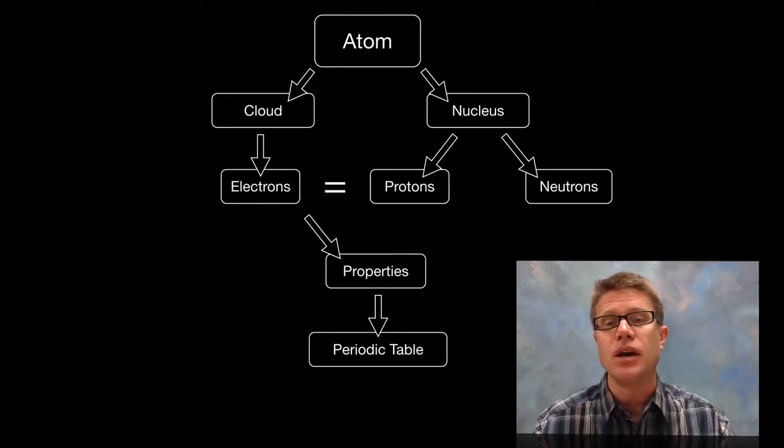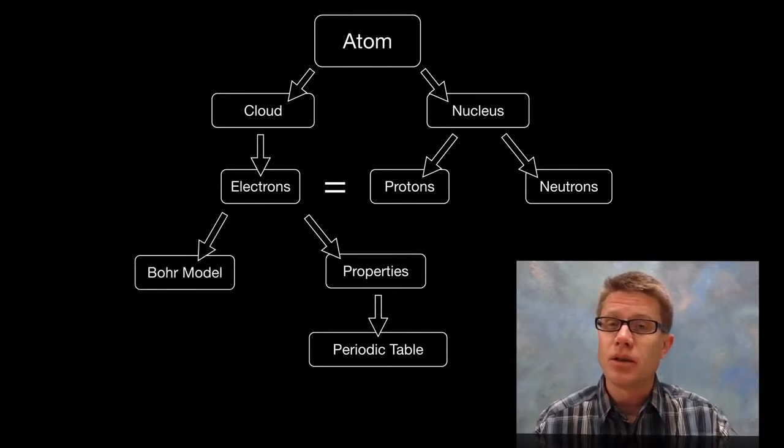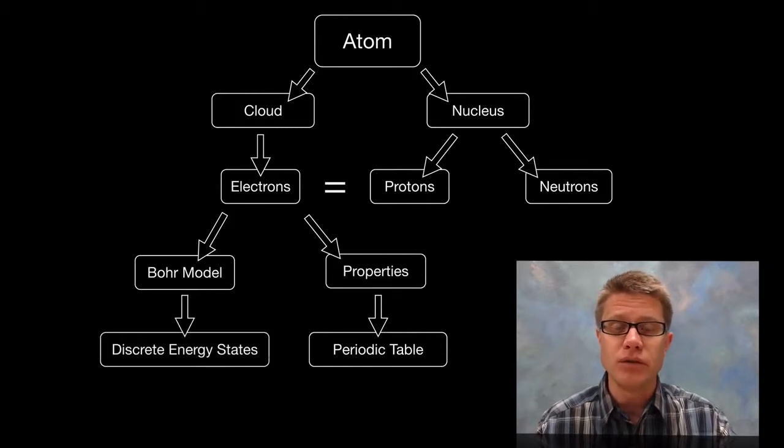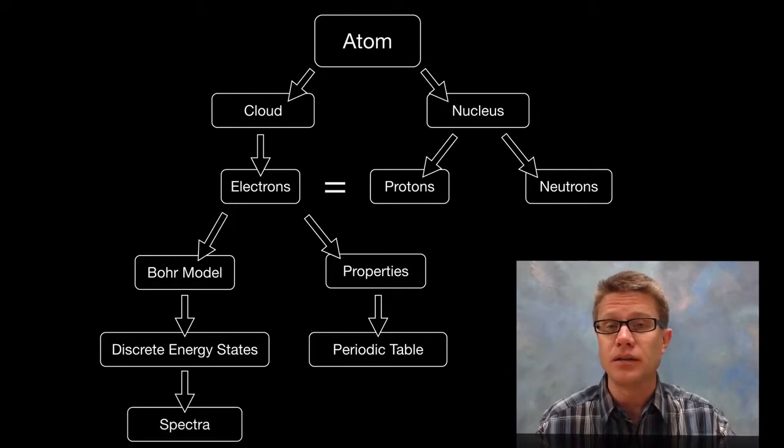Electrons, especially we have in these outer levels. Now the Bohr model helps us explain what those electrons are doing and how they are moving. They move into these discrete energy states, and that helps us to explain the spectra.